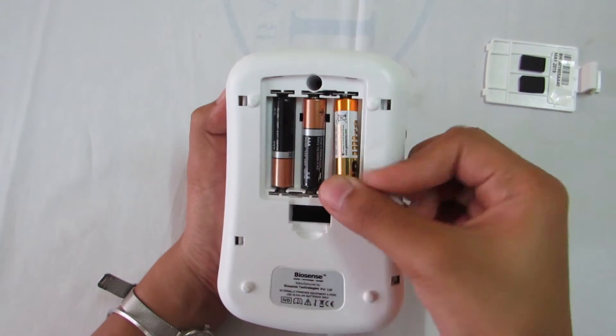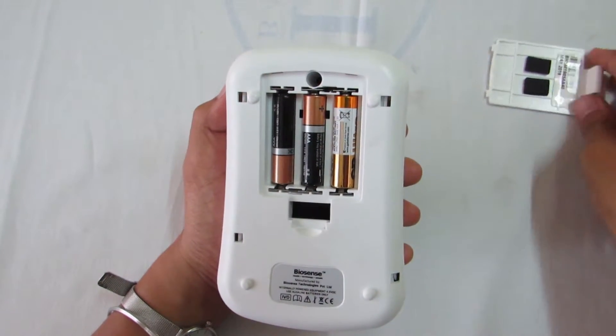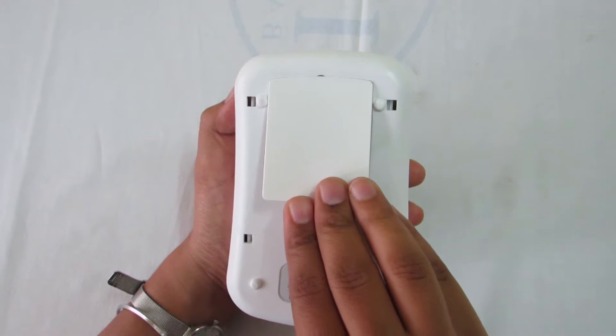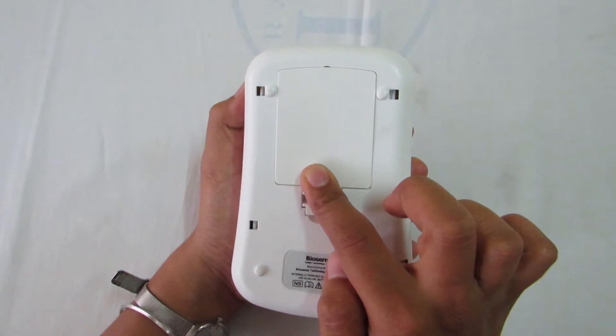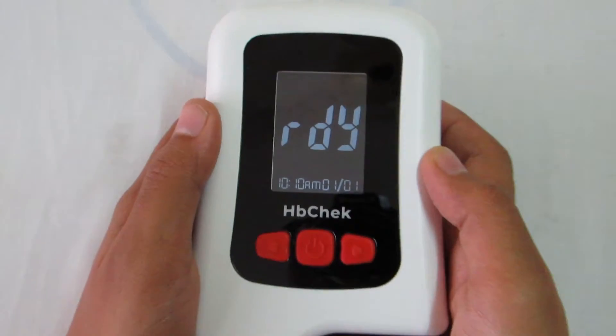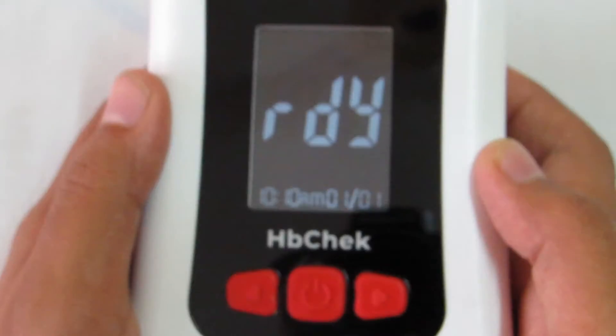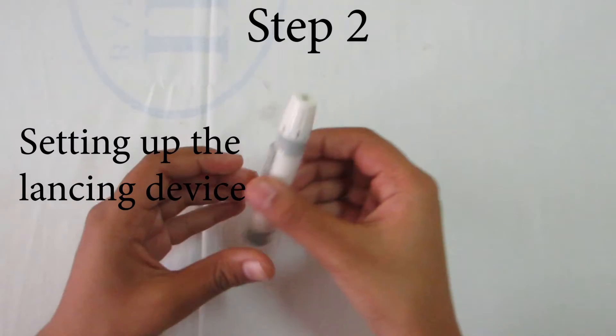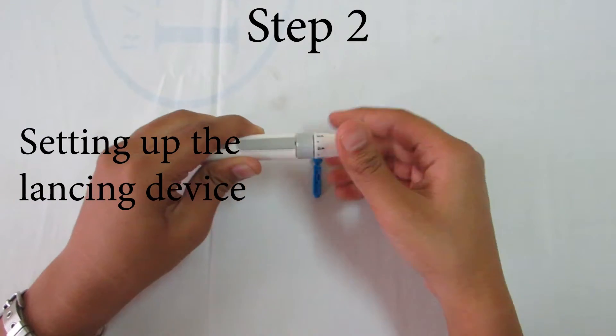After you insert the batteries, insert the back cover again. Turn the device over and press the center button and it will come on showing it is ready. Step 2: Setting up the lancing device. Open the top cover of the lancing device.